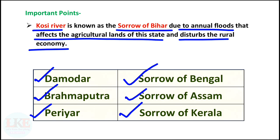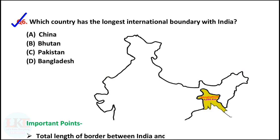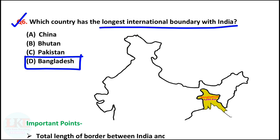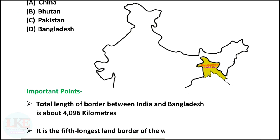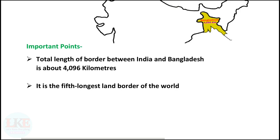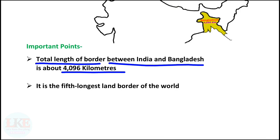Question number 6 — very important: which country has the longest international boundary with India? The right answer is option D: Bangladesh. Bangladesh has the longest boundary with India. The total length of the border between India and Bangladesh is about 4,096 km. Remember, it is the 5th longest land border in the world.